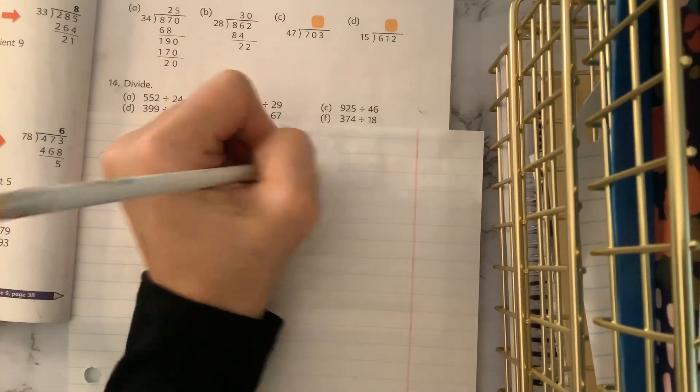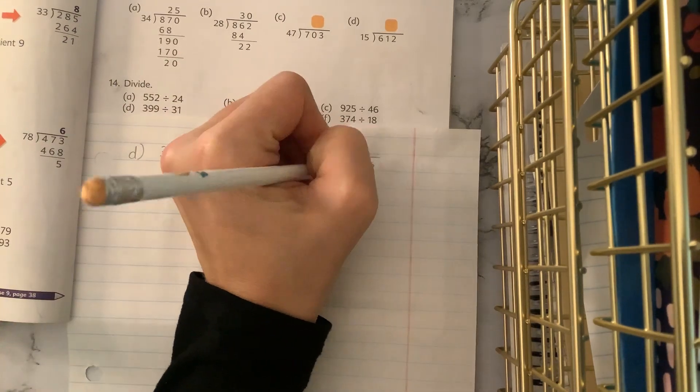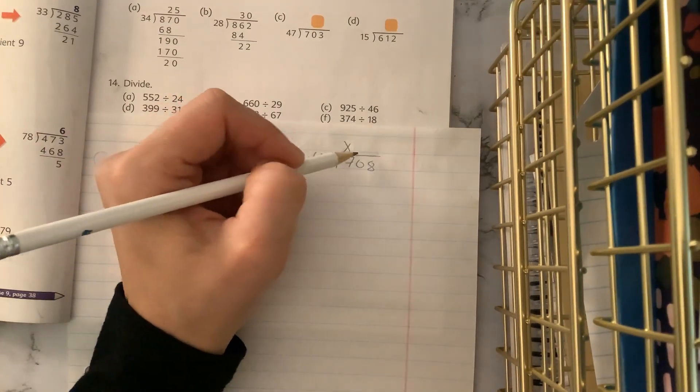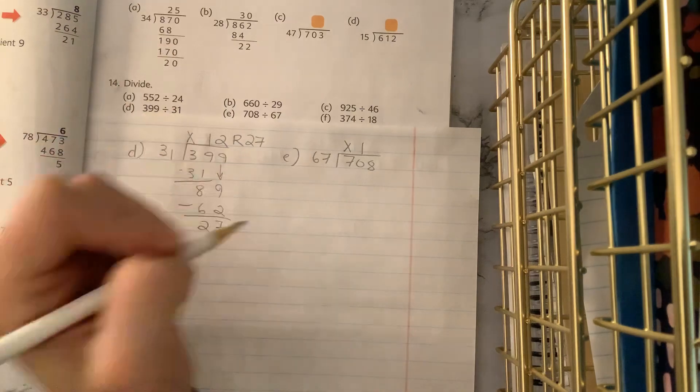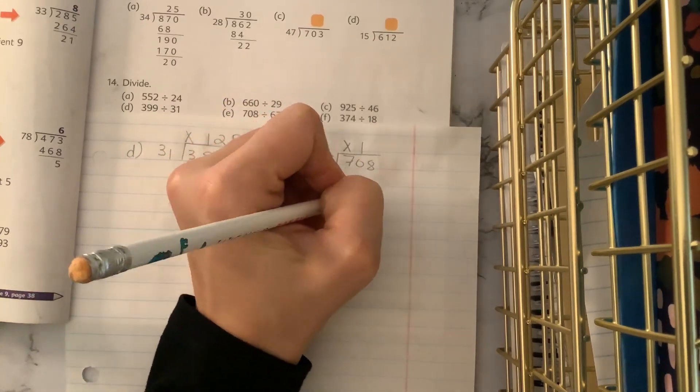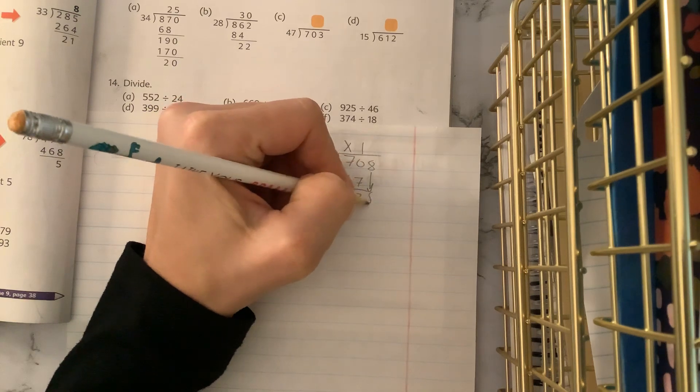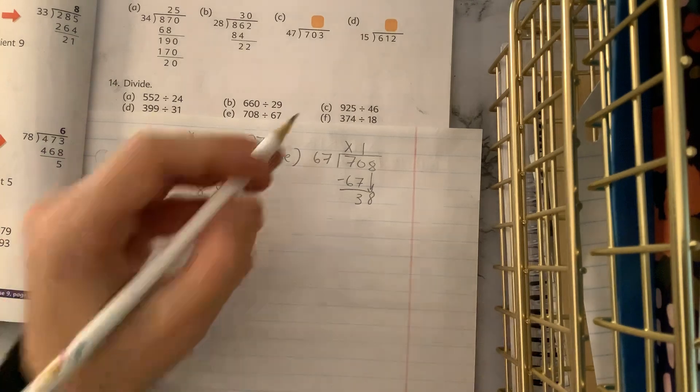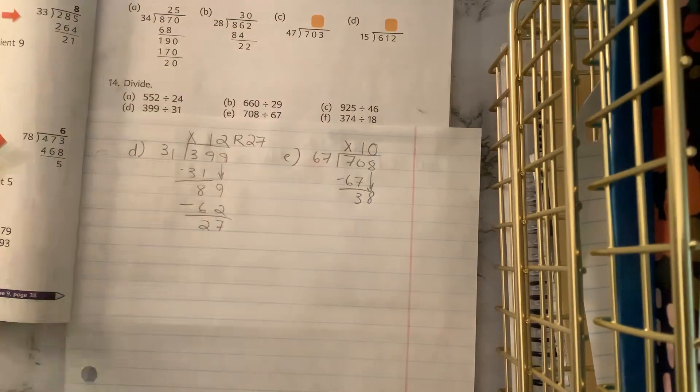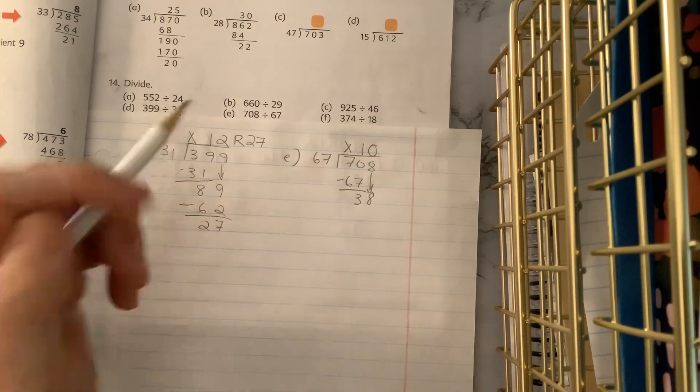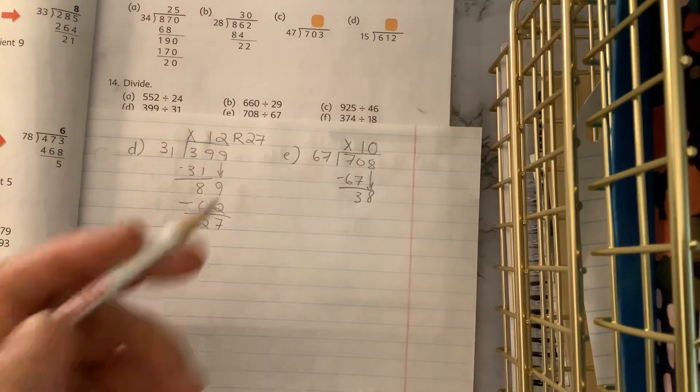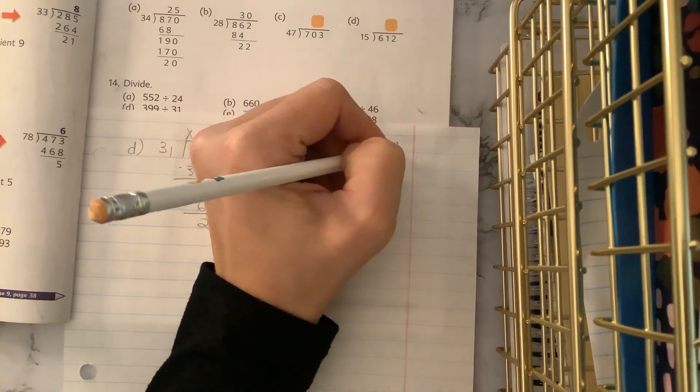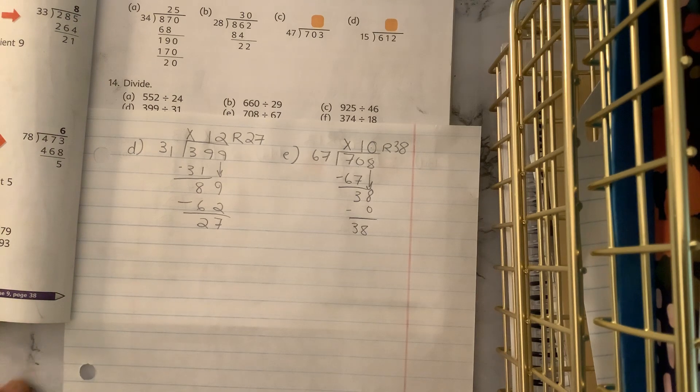E, you were asked to divide 708 divided by 67. 67 does not go into seven, and it goes into 70 just the once. We multiply and subtract. Bring down the eight. How'd you guys do? Were you tricked or did you do it right? How many times is 60 going to 38? Zero. I really hope you had a zero there. Remember something above each digit. We multiply, we subtract, and this is our remainder. Our answer should be 10 remainder 38.